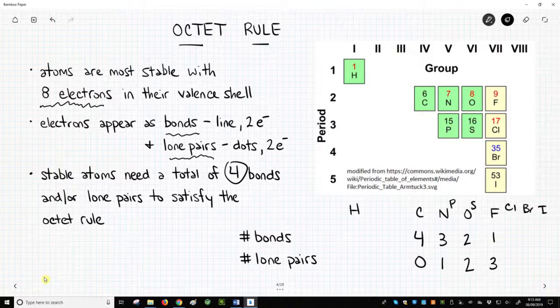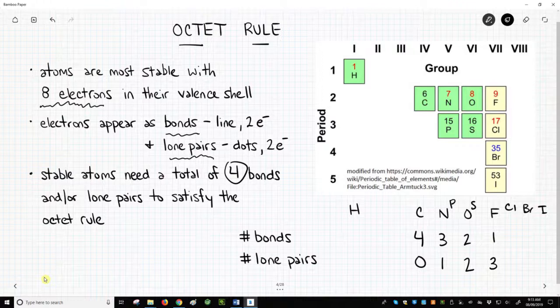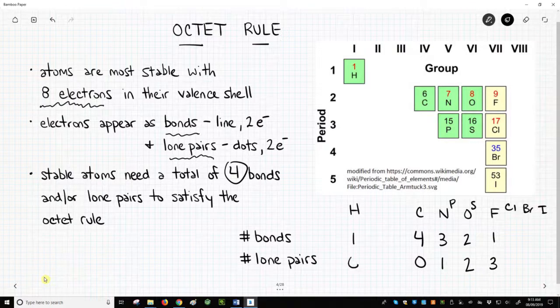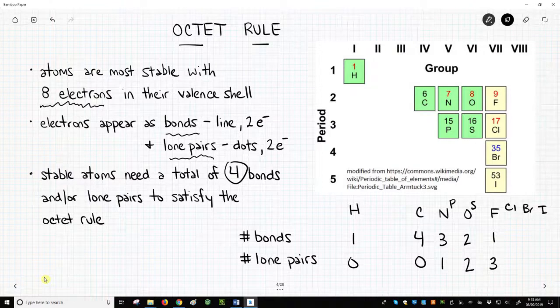As it turns out, hydrogen is a very small atom and it cannot handle eight valence electrons. Instead, hydrogen forms just one bond with no lone pairs and therefore obeys something called the duet rule.